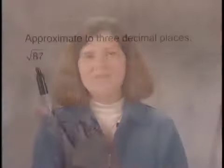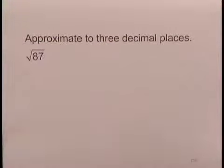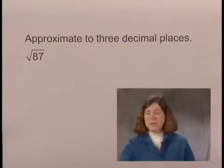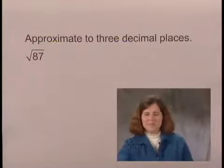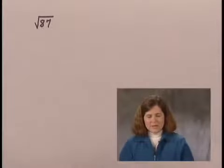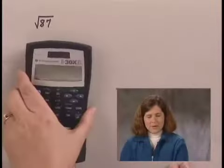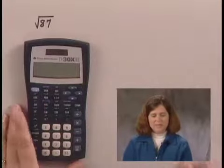We'll approximate the square root of 87 to three decimal places, and we'll do that approximation using a calculator. Using a calculator, we need to find the square root of 87.